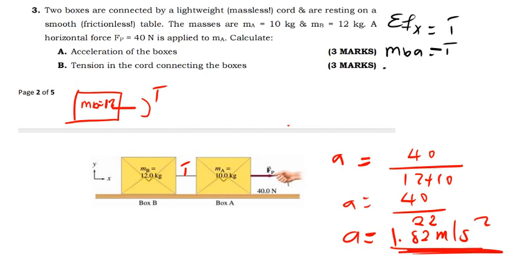The net force will be replaced by MB times acceleration to be equal to the tension force. So, MB is 12, acceleration is 1.82, being equal to the tension force. So, 12 times 1.82 is going to be 21. So, the tension is 21.84.